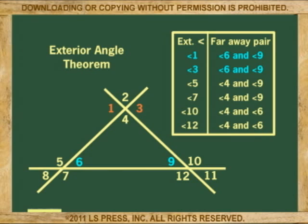For exterior angles 5 and 7, the far away angles are 4 and 9. For exterior angles 10 and 12, the far away angles are 4 and 6.